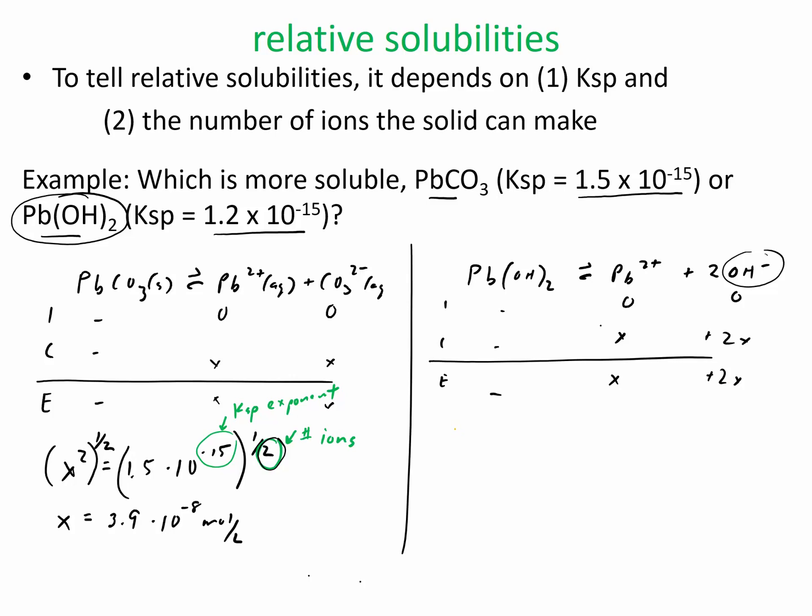So I'm going to end up getting, for my Ksp, I get Pb2+ times OH- squared. So I end up getting x times 2x squared, or x times 4x squared, which equals 4x cubed.